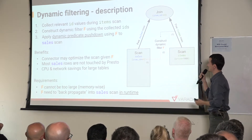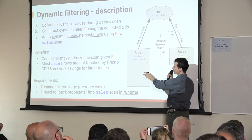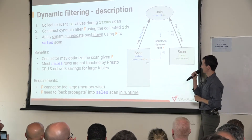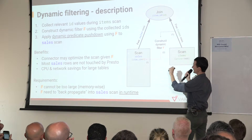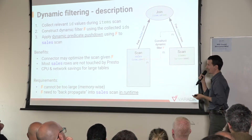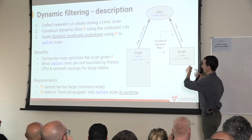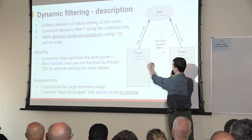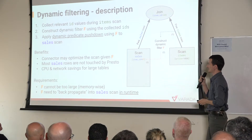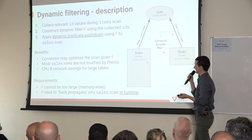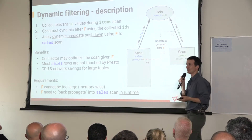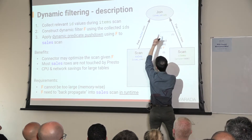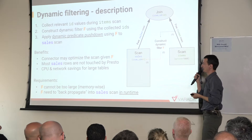The main benefit is that the scan can be optimized significantly — instead of a full scan, we look for specific IDs. If there are only two or three items with a high enough price, we don't need to scan the whole table and then discard rows at the join. We can just pick up the relevant sales rows for those specific items. Most rows won't be touched by Presto at all, resulting in significant CPU and networking savings.